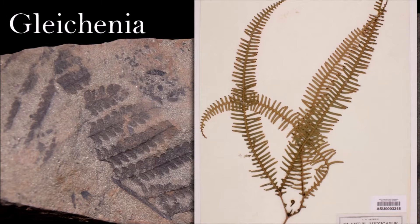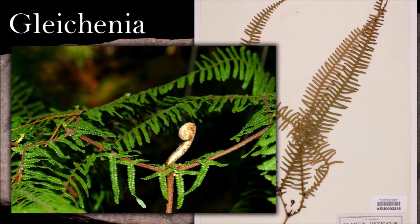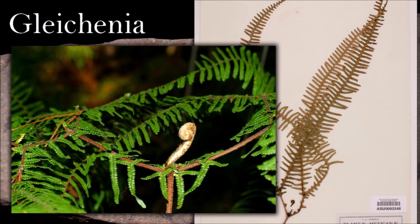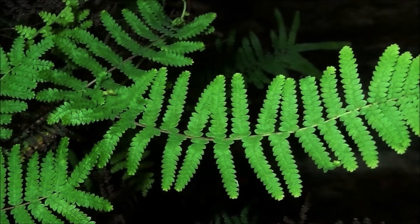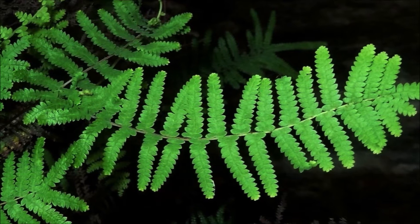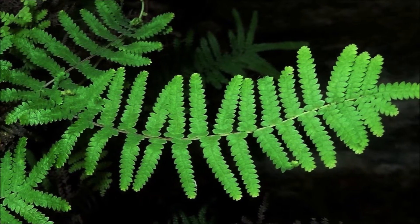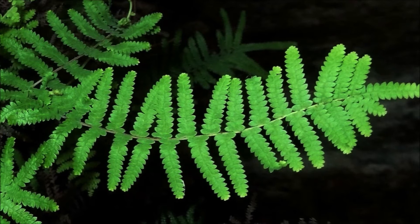It has a creeping rhizome and fronds that grow enormous by continuously dividing their side branches. Cladophlebis forms dense thickets by scrambling or climbing over other plants, and is a genus of the primitive Gleicheniaceae family, whose members have simple rhizomes covered with hairs. Its large sporangia are arranged in circles on the underside of the fronds. Gleicheniaceous ferns were most common in the Cretaceous; the earliest specimens were found in England.